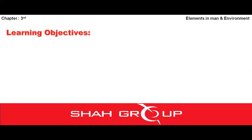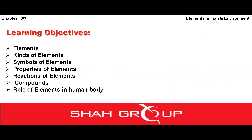But first of all, we will see the learning objectives. Learning objectives mein aapko maine bataya tha ki jo hum topic is chapter mein padhenge woh hai hamare paas Elements, Kinds of Elements, Symbols of Elements, Properties of Elements, Reactions of Elements, Compounds, aur last topic hai Role of Elements in Human Body. Last lecture mein maine aapko Elements aur Kinds of Elements explain kar chuki thi.